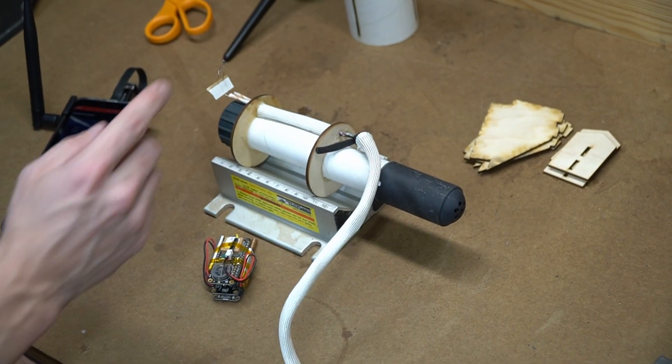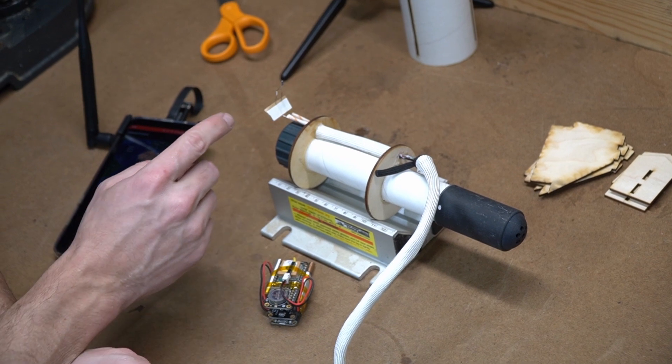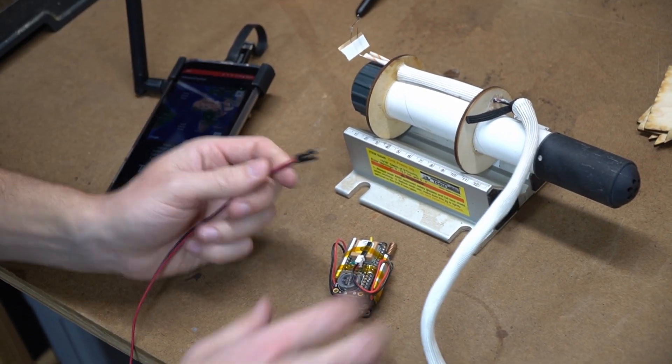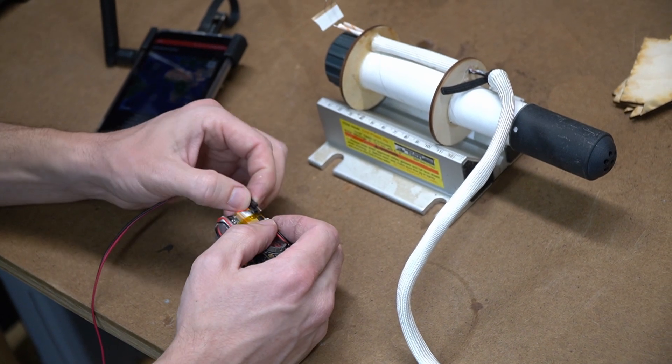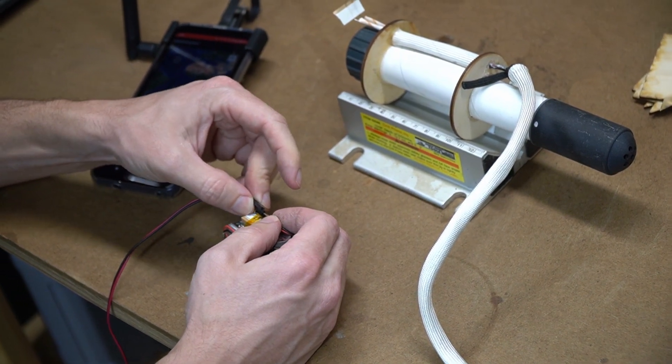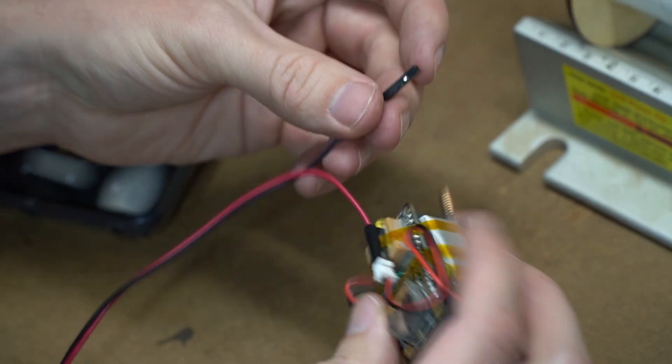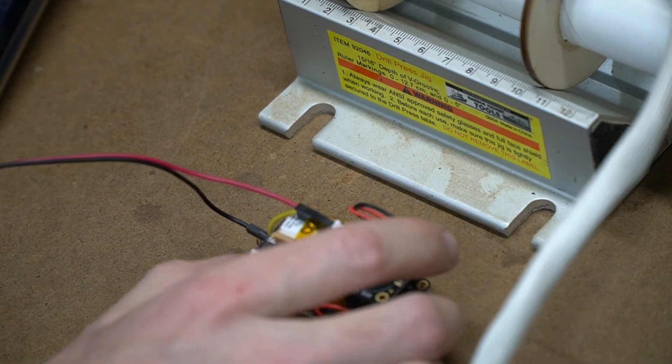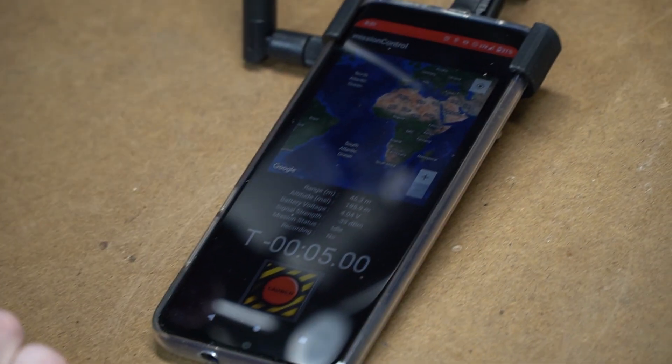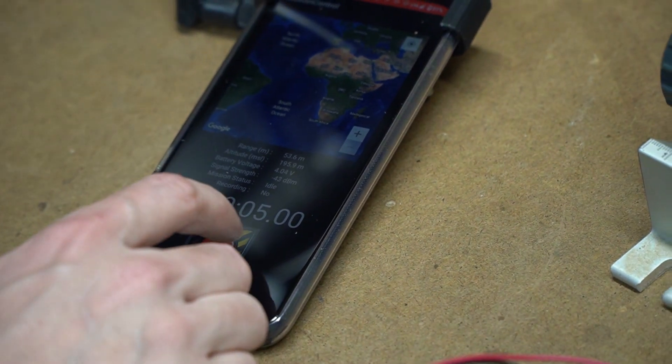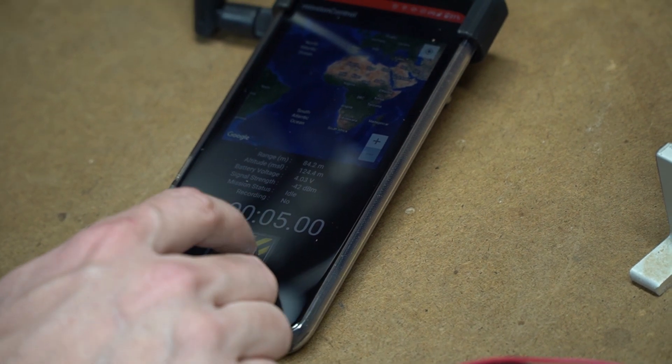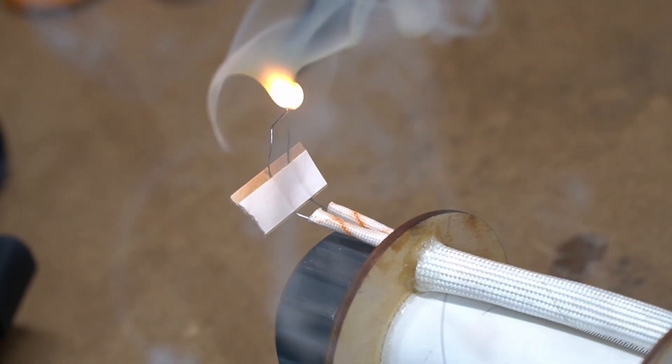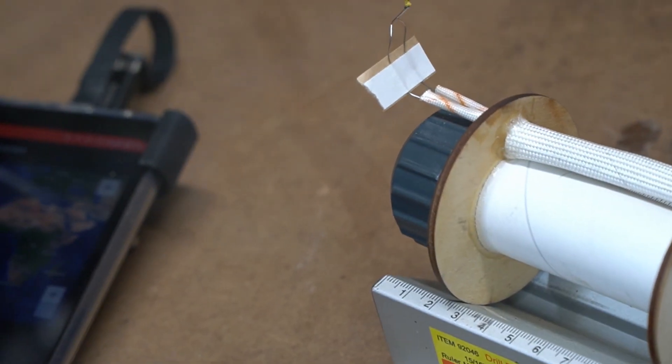Before we glue the motor mount into the body tube, we're just going to test fire and burn an igniter here just to make sure all our connections are good. This end will attach to the electronics payload and it'll go to the relay, one of the battery and one of the relay. Power is on and I have the receiver connected to my smartphone. Two, one... that would have been a successful ignition. So we're good.